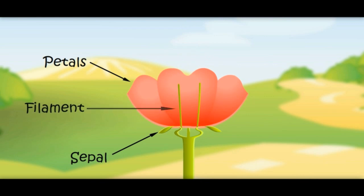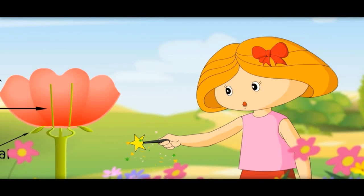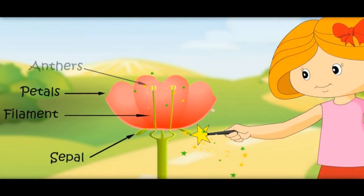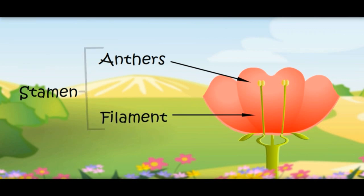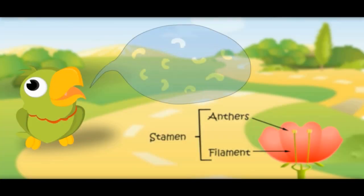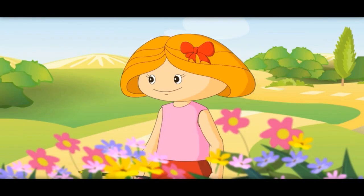Here comes the filaments. Bring few anthers too. These filaments and anthers are the male parts of the flower. Jointly, these are called stamen. Male parts: stamen — anthers and filaments.